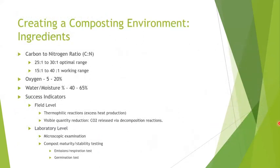As previously discussed, there are specific ingredients needed to create an ideal composting environment. Similar to baking a cake, it is important that the ingredients are used in proper ratios. The optimal carbon-to-nitrogen ratio is between 25:1 and 30:1 — that's 25 to 30 parts carbon to one part nitrogen. This ratio has been proven optimal for feedstock composting, though composting can still occur from a wider range of 15:1 to 40:1. For aerobic composting to occur, there must be at least 5% oxygen.